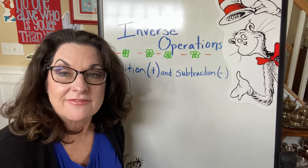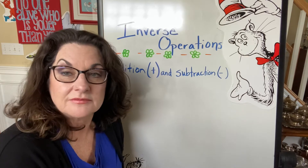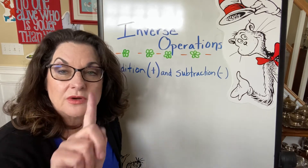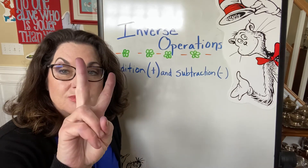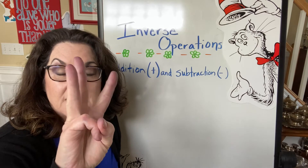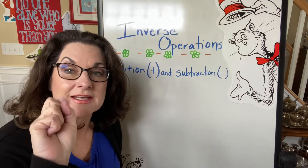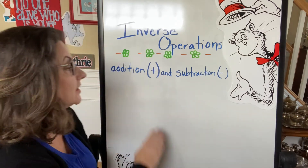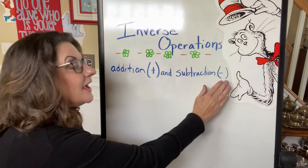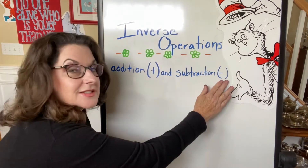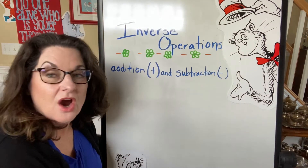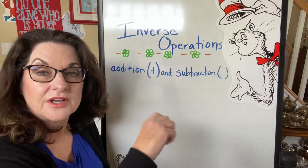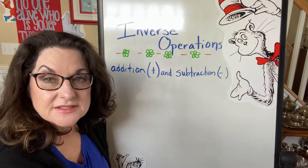In math, we have four operations. That's it. No matter what complicated math you do, we just do addition, subtraction, multiplication, and division. And addition and subtraction — adding and subtracting, plus and minus — are inverse. They're upside down. They're the opposite.